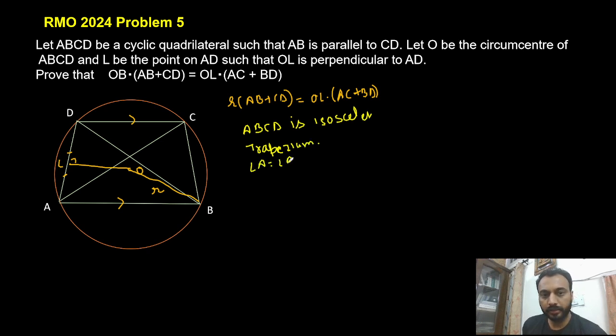So angle A is equal to angle B and angle C is equal to angle D. Now if I just rewrite this equation by using this isosceles trapezium, like we know that in isosceles trapezium AC is equal to BD.